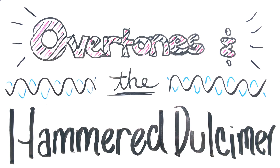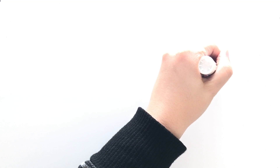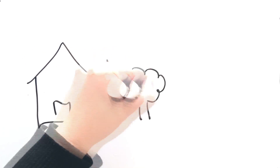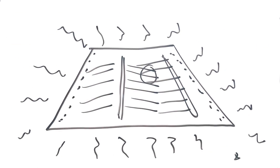Hey everyone, I'm Katie Moritz and today I'm going to talk about the overtone series and the hammered dulcimer. The overtone series is a universal acoustic phenomenon. Overtones occur when a resonant object such as a guitar string is plucked, or when air moves through a resonant tunnel such as when a flute is being played. It even occurs with the wind when it's whistling outside your house through the trees, and it occurs anytime you hit a string on your hammered dulcimer.